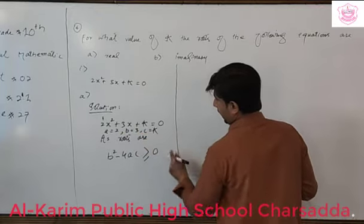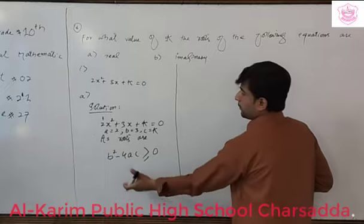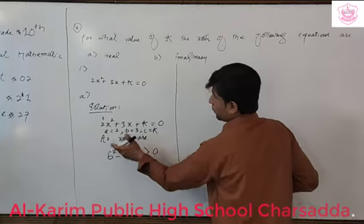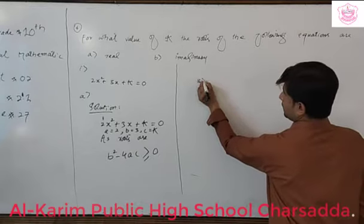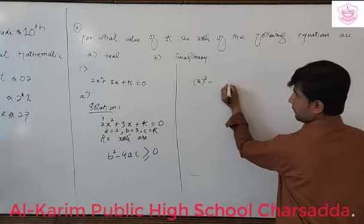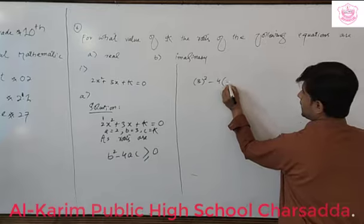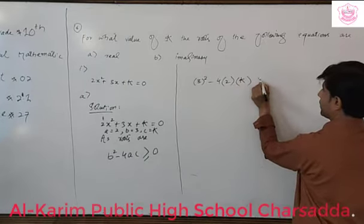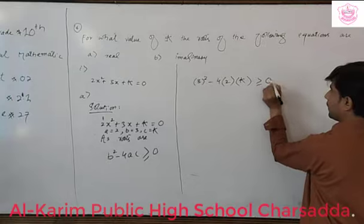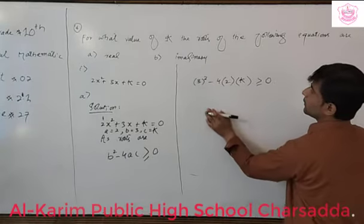In the discriminant, we replace b with 3, a with 2, and c with k. So 3 squared minus 4 times a, which is 2, times c, which is k, must be greater than or equal to zero.